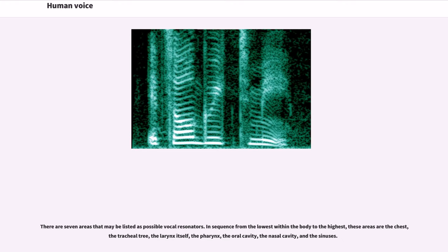There are seven areas that may be listed as possible vocal resonators. In sequence from the lowest within the body to the highest, these areas are the chest, the tracheal tree, the larynx itself, the pharynx, the oral cavity, the nasal cavity, and the sinuses.